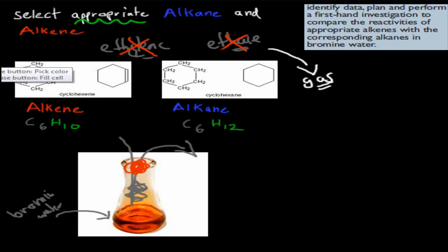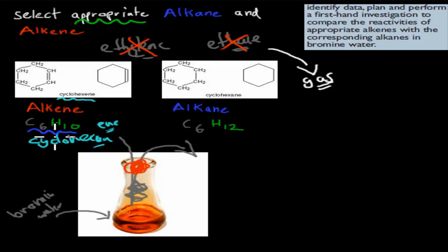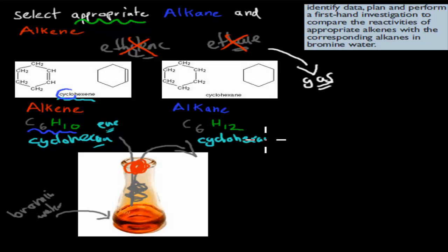The appropriate compounds are cyclohexane and cyclohexene. These are corresponding alkane and alkene, and they're both very similar in structure. Cyclohexene has an -ene ending, making it an alkene, with formula C₆H₁₀. It doesn't fit the standard CnH2n formula exactly because in its cyclic form it has fewer hydrogens — but it is indeed an alkene. Similarly, cyclohexane is the appropriate alkane.